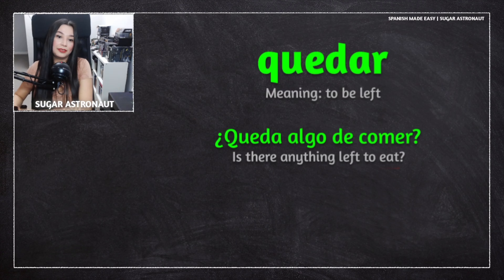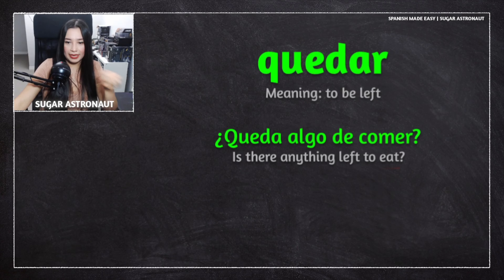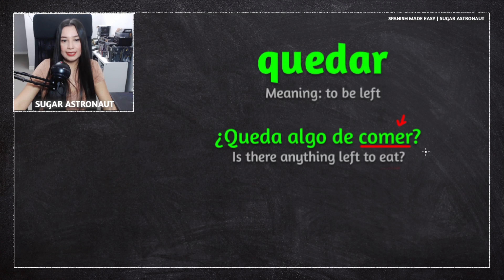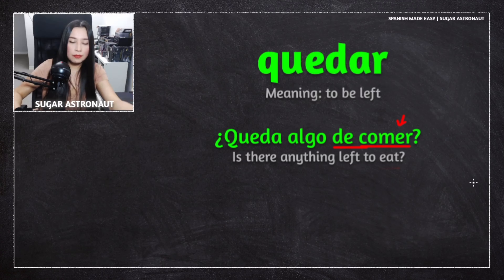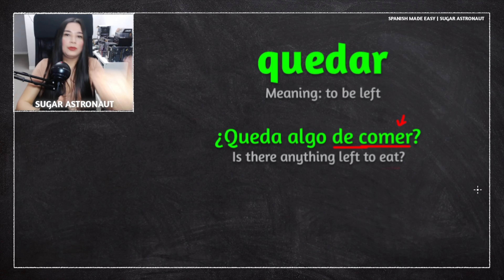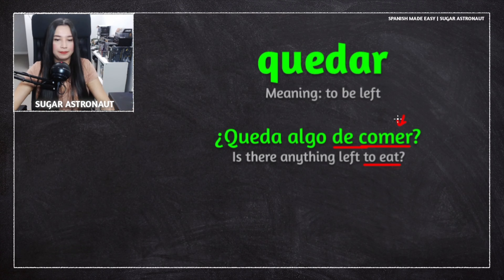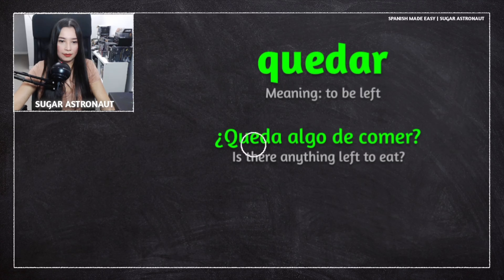'De comer' is a very common phrase meaning 'to eat.' Whether you say '¿Hay algo de comer?' or '¿Queda algo de comer?', you're asking about food — it's a very common phrase.